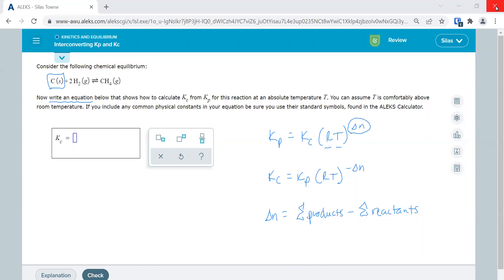And so here we have 1 as a product minus 2, and we get negative 1. So delta N equals negative 1, but then we're putting in a negative delta N. So a negative negative 1 equals 1.